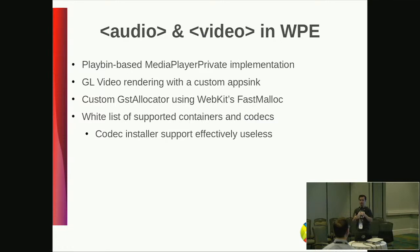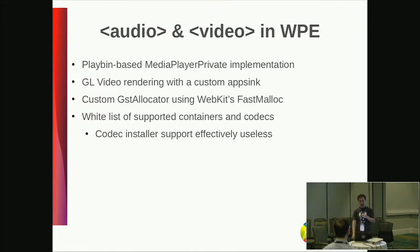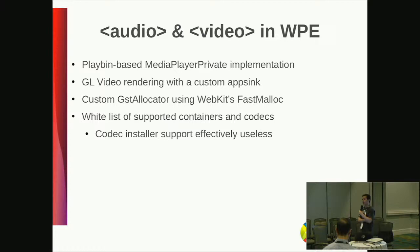In WebKit, all the layers of the web page are composed and blended together, and the video is one of those. So we need our player to provide a texture to that infrastructure so that the video frames can be composited in the final page. In WebKit, there's a library called FastMalloc which provides the equivalent of the malloc infrastructure but specific to WebKit, so we had to integrate that in a custom allocator. And for supporting codecs, we had to build a whitelist of codecs that we know work well. That's useful for the media capabilities backend.